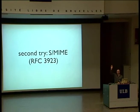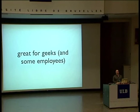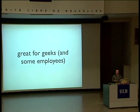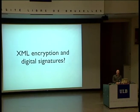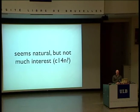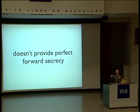What about XML encryption and digital signatures? There really has not been much developer interest. You've got to do canonicalization — C14N — which is really no fun. And it doesn't provide perfect forward secrecy, so if your keys get compromised, someone can go back and read all your old messages. Then there's something called off-the-record communications, OTR. It's opportunistic encryption, something like SSH. That provides perfect forward secrecy. But it encrypts only the message body — it doesn't encrypt anything else in the packet. We need to encrypt the entire packet.